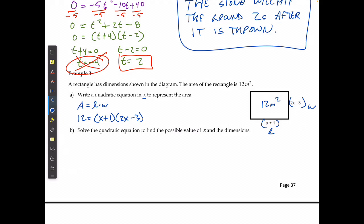And that's going to be x plus 1 times 2x minus 3. Now, I also know that when I multiply this out, 12 is going to equal 2x squared minus x and then minus 3. When I move everything to one side of the equation, 0 is equal to 2x squared minus x minus 15.